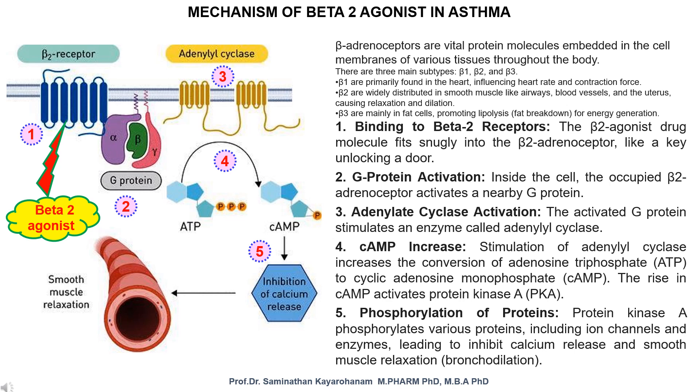Step 2: G-protein activation. Inside the cell, the occupied beta 2 adrenoceptor activates a nearby G-protein.